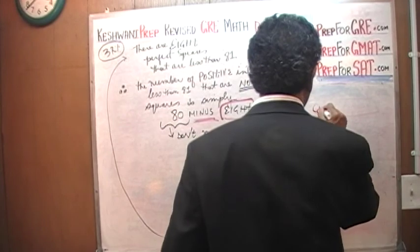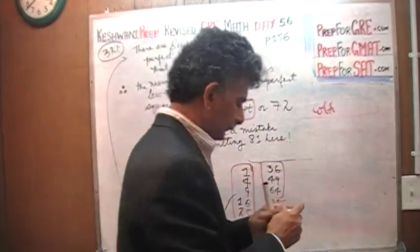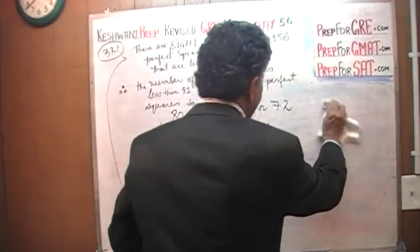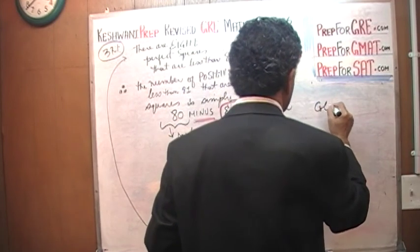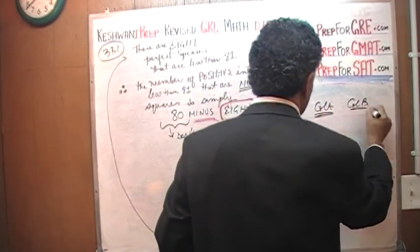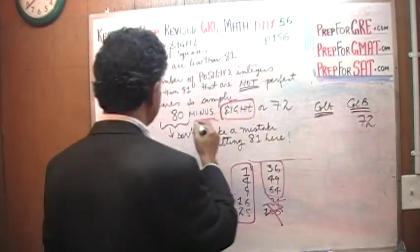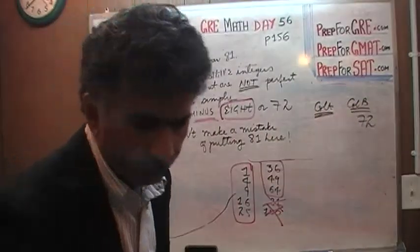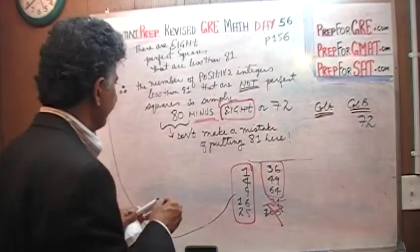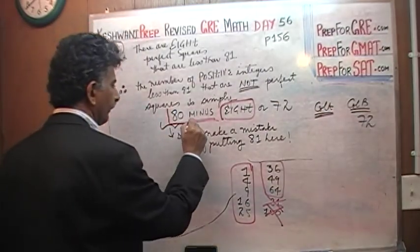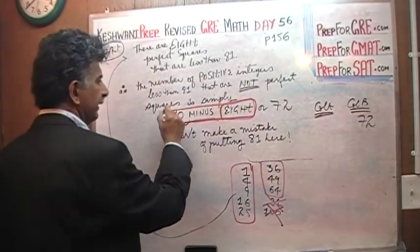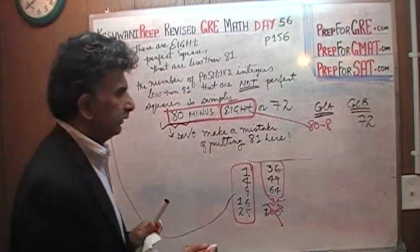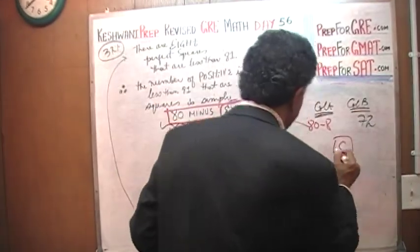That is what we have in column A. Column B gives you 72. Column A — 80 minus 8 — which is 72. Therefore the answer is C. That's all.